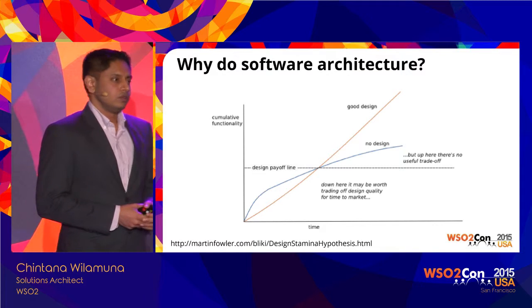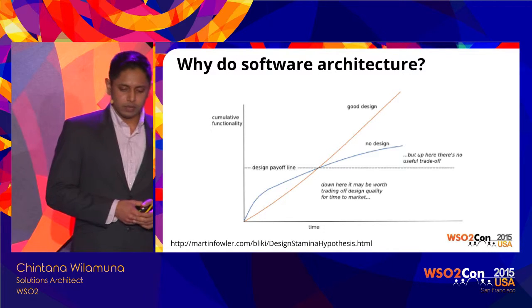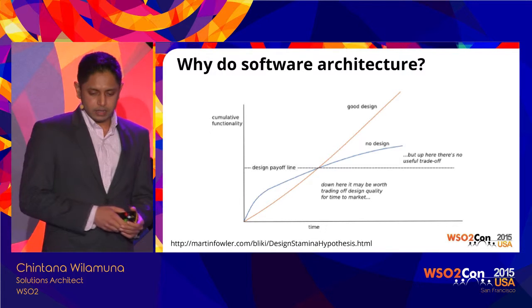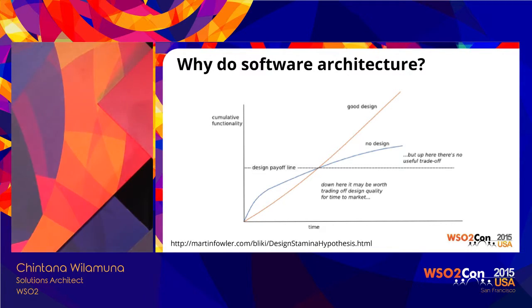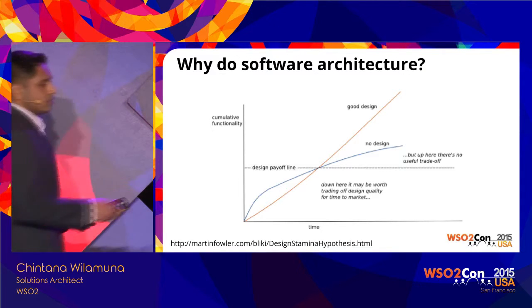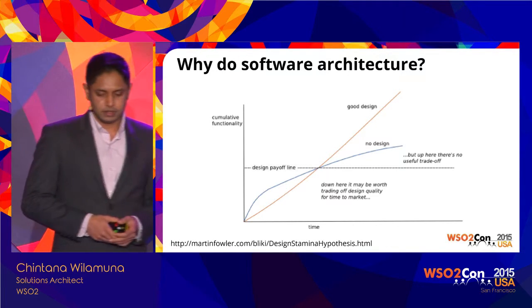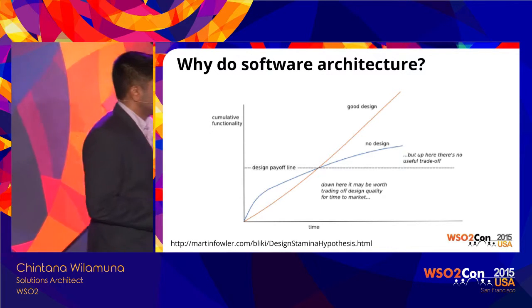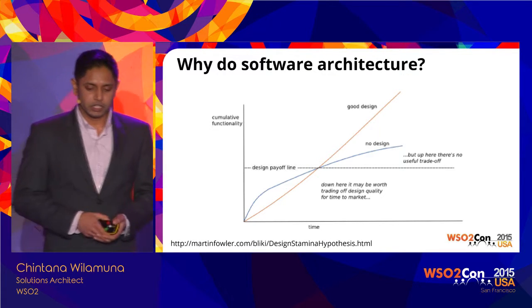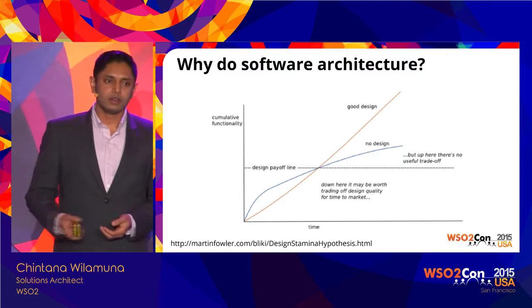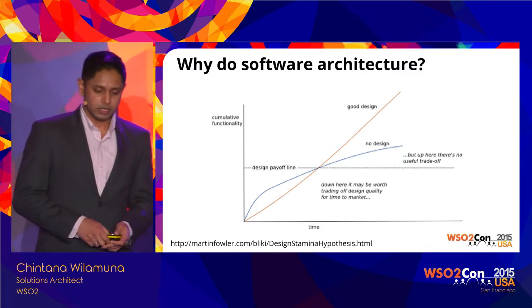So why do you have to spend time on software architecture? Martin Fowler has a diagram where the blue line — representing no design — starts very fast. The y-axis is cumulative functionality and the x-axis is time. At first, with no design, you churn out features much faster. But with the red line — upfront design — even though the feature rate is slower at first, it becomes easier to add features over time. Having an iterative approach to software architecture is important.